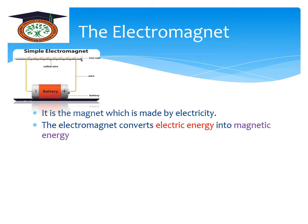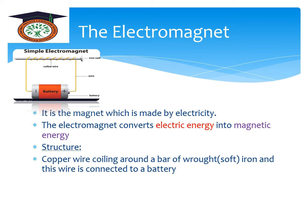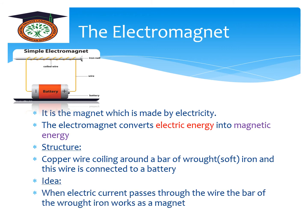The structure of the electromagnet: to make an electromagnet, we need a battery, copper wire, and a soft iron nail rod connected to the battery. When the electric current passes through the wire, the iron rod works as a magnet.